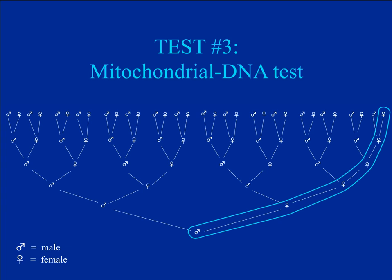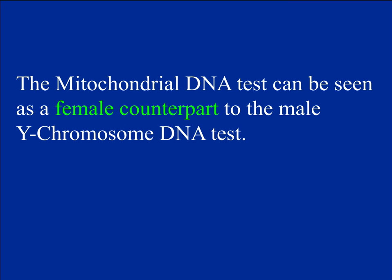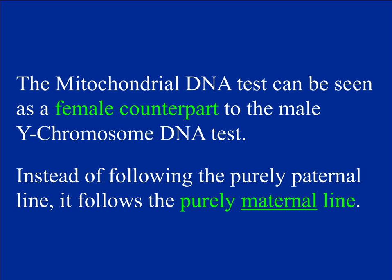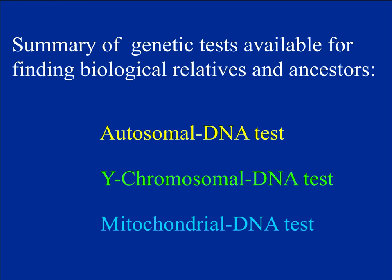The mitochondrial DNA test can be useful for figuring out if two people are connected through a purely maternal line — it is the female counterpart to the Y-chromosomal DNA test. To summarize: the autosomal DNA test compares 22 pairs of chromosomes and effectively compares all my ancestors with all of the other person's ancestors. The Y-chromosomal DNA test checks for common ancestry in purely paternal lines of two men. The mitochondrial DNA test checks for common ancestry in purely maternal lines of any two people.